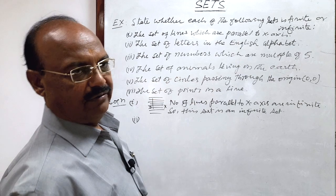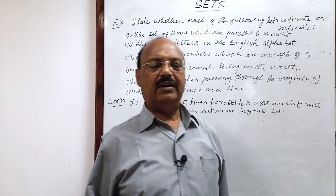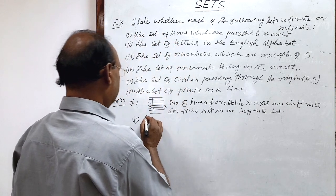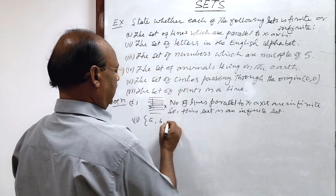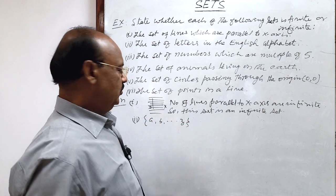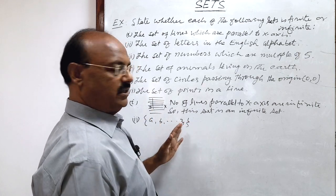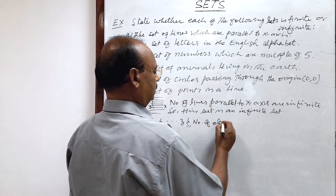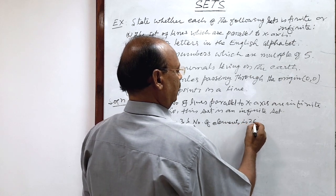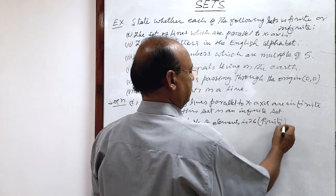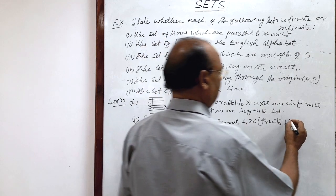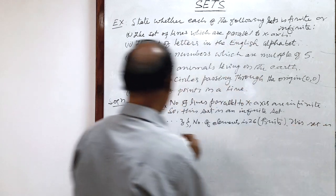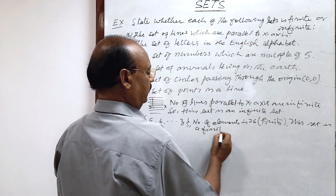Second question: the set of letters in the English alphabet. The set of English alphabets consists of 26 alphabets, starting from A to Z. The number of elements is 26, which is a finite number. So this set is a finite set.